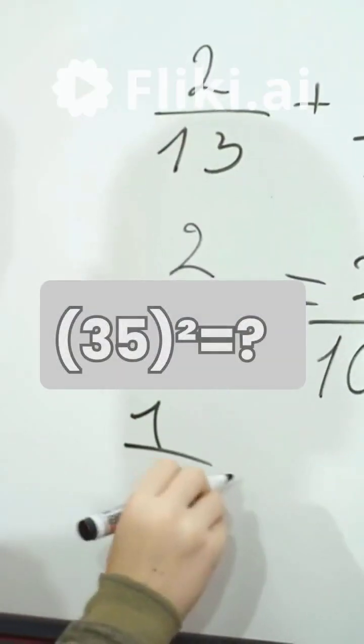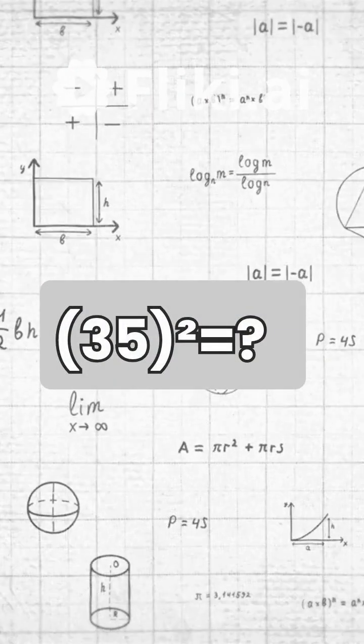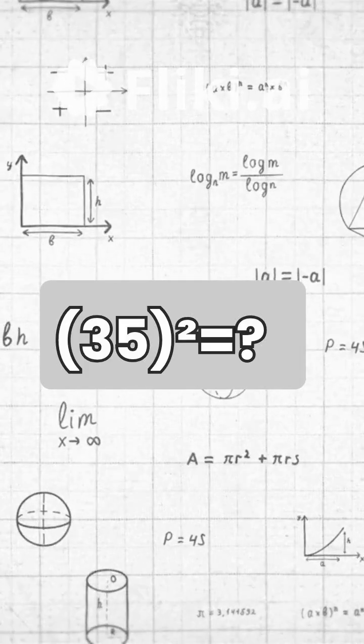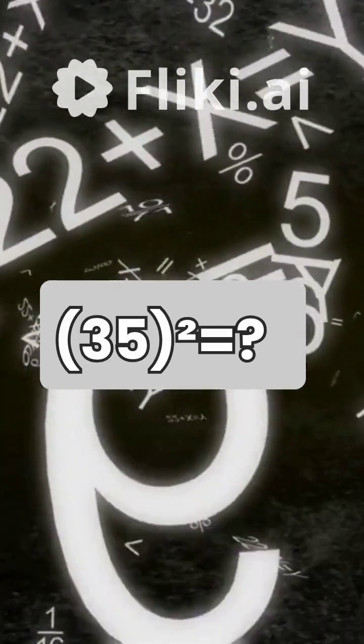Let's take 35 squared as an example. This method is super easy to grasp and apply to any number ending in 5. Get ready to be amazed.